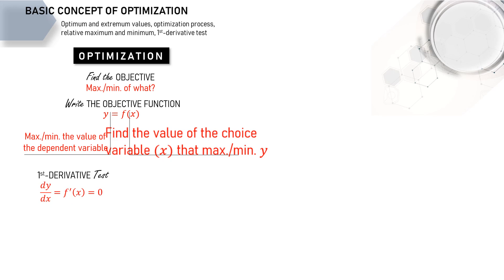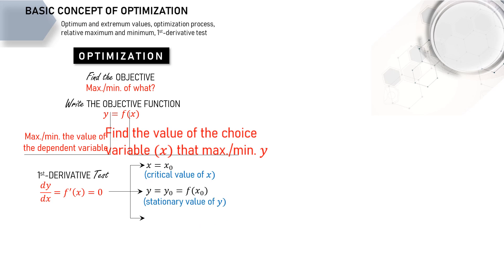By equalization, we may obtain the critical value. Then accordingly we find the stationary value and the stationary point, which contains both the critical and stationary value. Using the first derivative test, we can find whether the stationary point is a relative maximum, a relative minimum, or an inflection point instead.